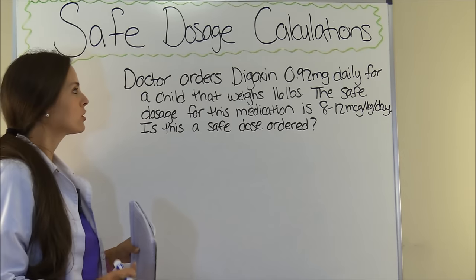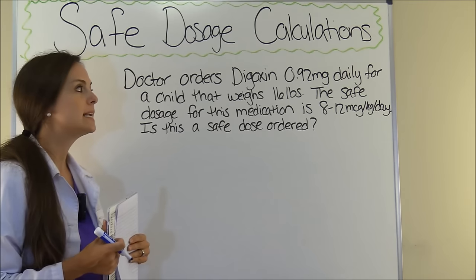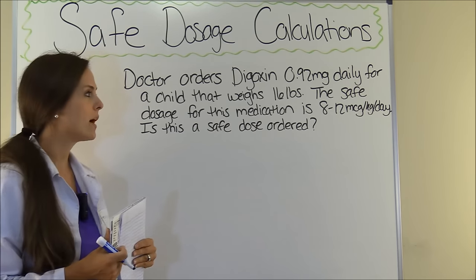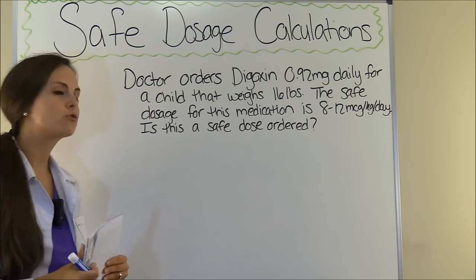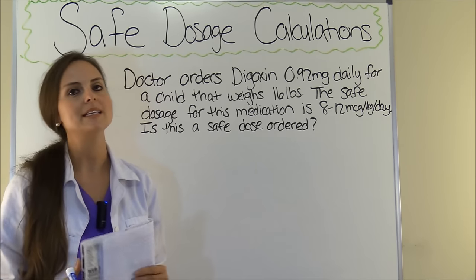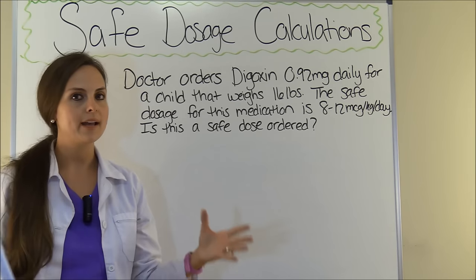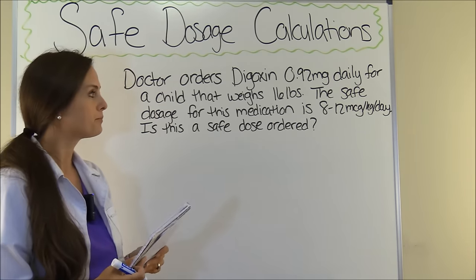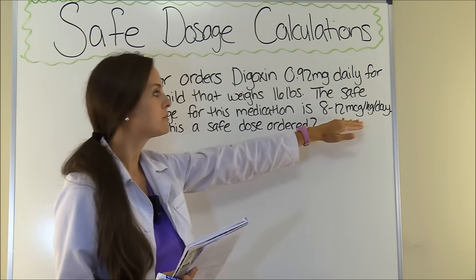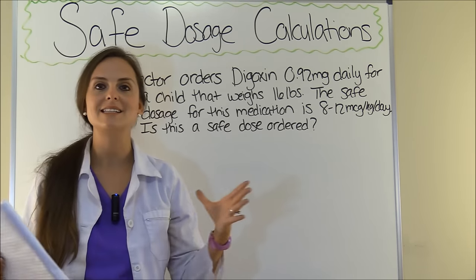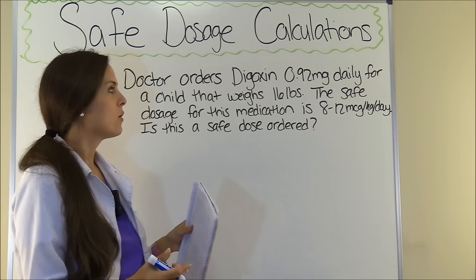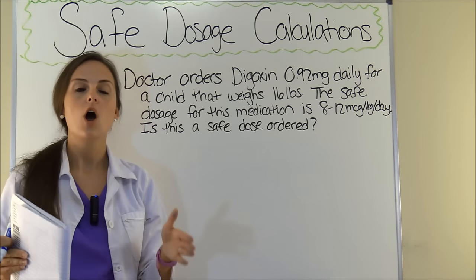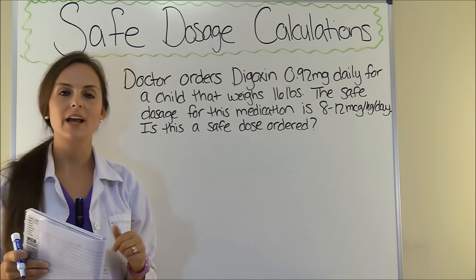Problem 4: doctor orders digoxin 0.92 milligrams daily for a child that weighs 16 pounds. The safe dosage is 8 to 12 micrograms per kilogram per day. Is this a safe dose? This is similar to the previous problem but with an extra challenge: what the doctor ordered is in milligrams while the safe dosage range is in micrograms, so we'll need an extra conversion step. We'll find the minimum dose using 8, then the maximum using 12, and see if the ordered dose falls within range.